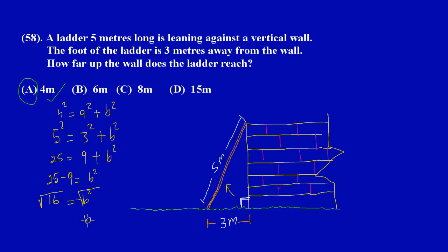The square root of b² is b and the square root of 16 is 4. So obviously the wall would be 4 meters high. Hope this was useful. See you in the other videos when we'll be looking at questions 59 and question 60. Bye bye.